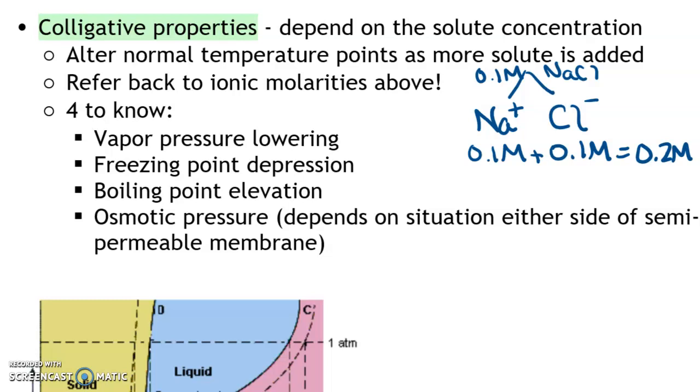The main colligative properties that you need to know are the two that go down. So vapor pressure goes down and freezing point goes down and then boiling point increases. Osmotic pressure depends on what's already on the sides of a semi-permeable membrane. Remember that osmosis only happens when water moves across a semi-permeable membrane. So it depends on where the solutes are in that particular case.